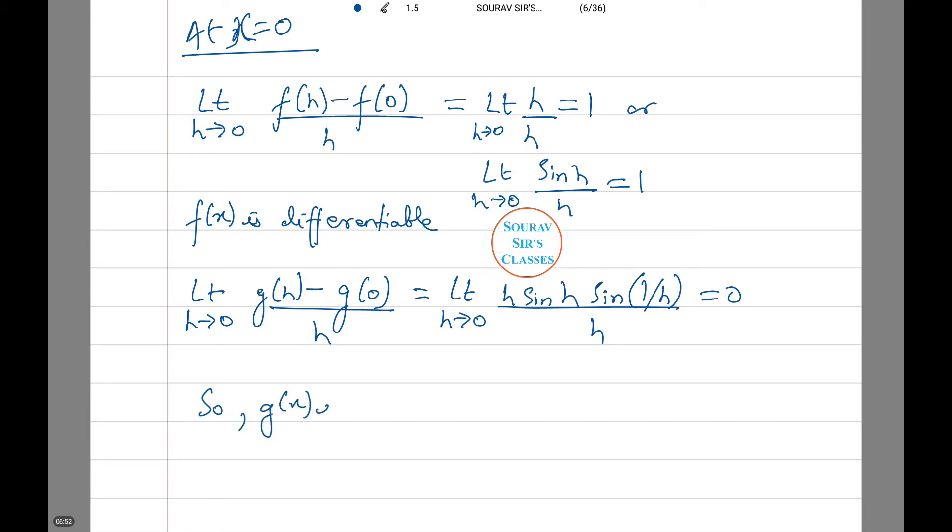So, g(x) is differentiable at x equals 0. Thus, from our options, it's option A where both f(x) and g(x) are differentiable at x equals 0. Moving on to the next.